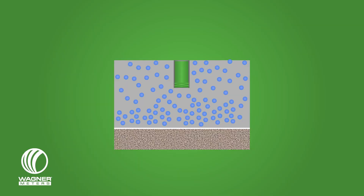With relative humidity testing, you are testing a small pocket of air at a specific depth by drilling a hole into the concrete, installing an electronic sensor, and waiting 24 hours for definitive flooring installation results.